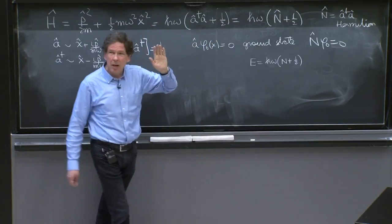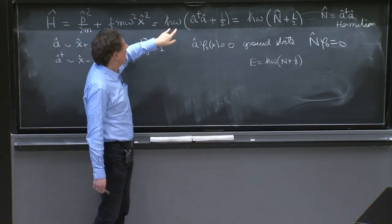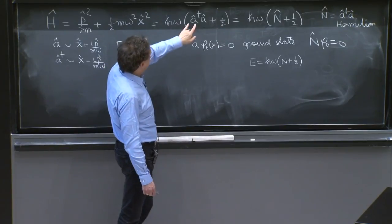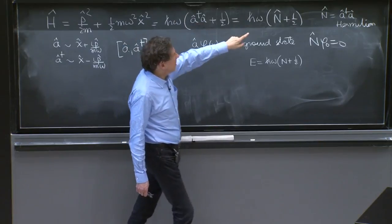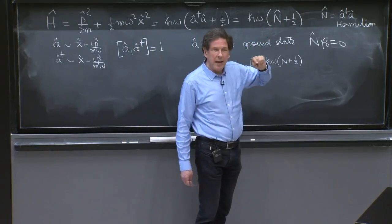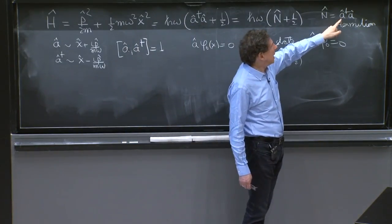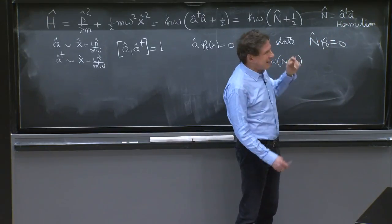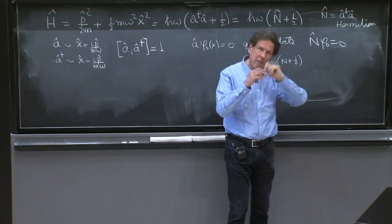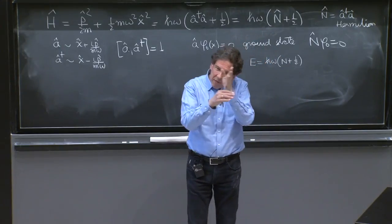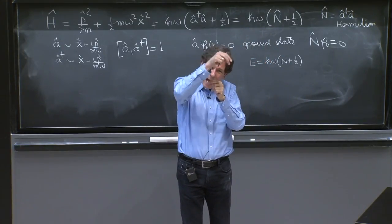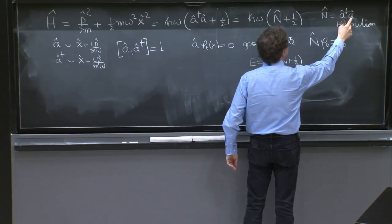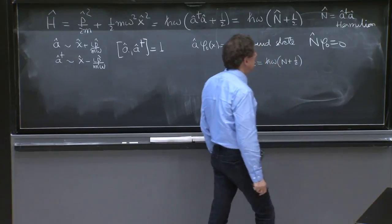that any energy eigenstate would have to have energy greater than h-bar omega over 2. We call this a dagger a the number operator n, which is a Hermitian operator. Recall that the dagger of a product of operators is the reverse order product of the daggered operators. So the dagger of a dagger a is itself.